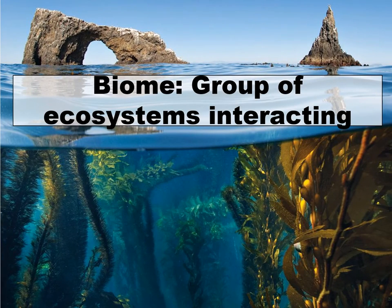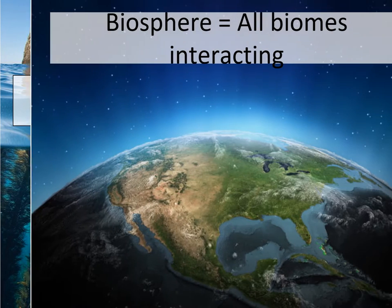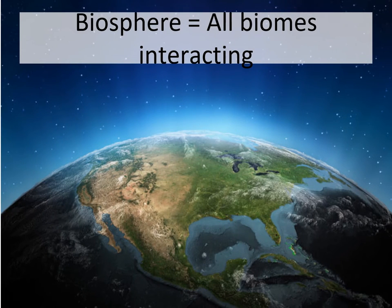We also have the biome level, which is a group of ecosystems that interact together. You may be familiar with some biomes from middle school, such as the tundra, taiga, and chaparral. Lastly, the biggest piece of the ecological hierarchical scale is the biosphere, which is really just another name for the living Earth — it is all the biomes interacting together.